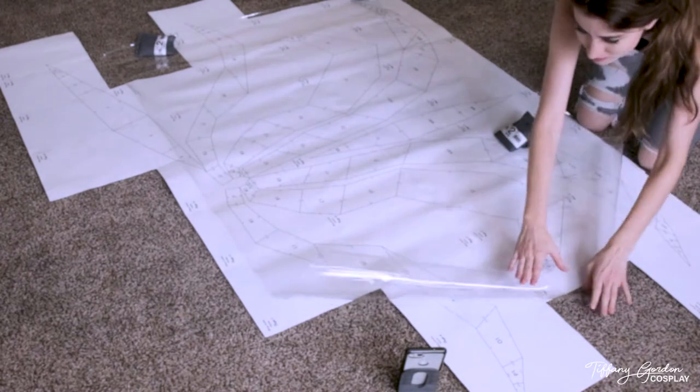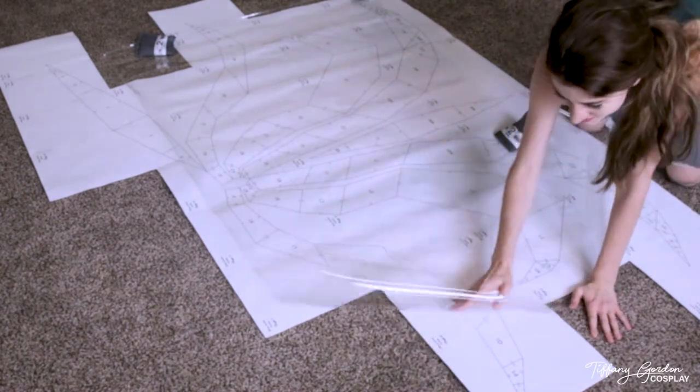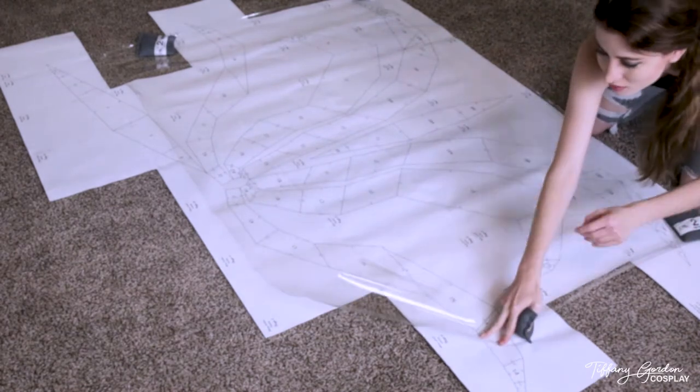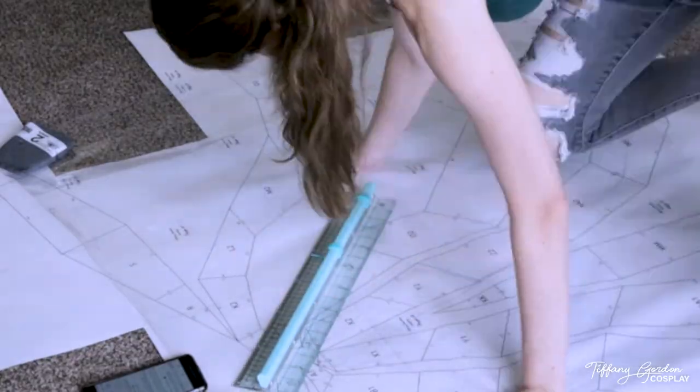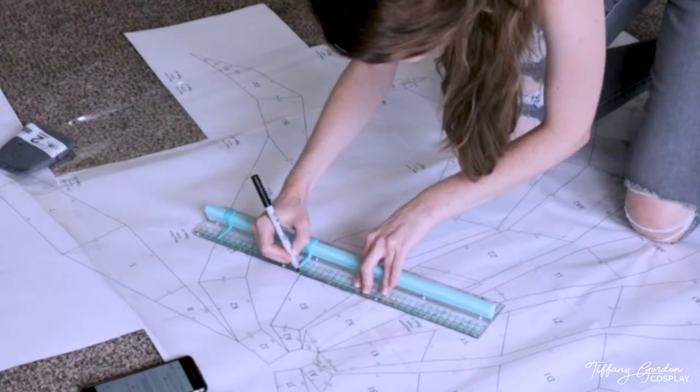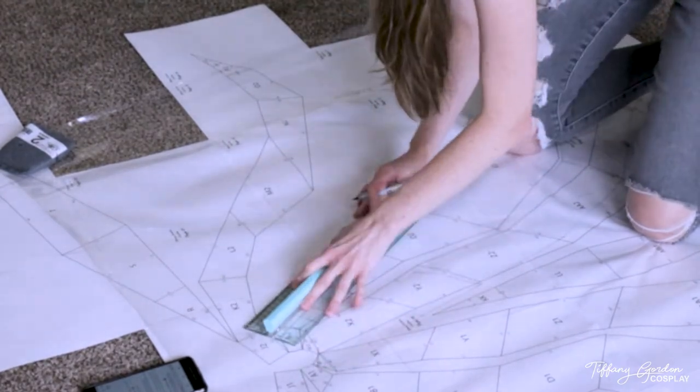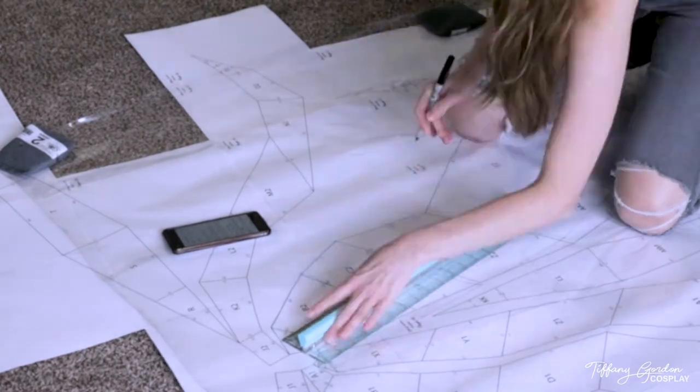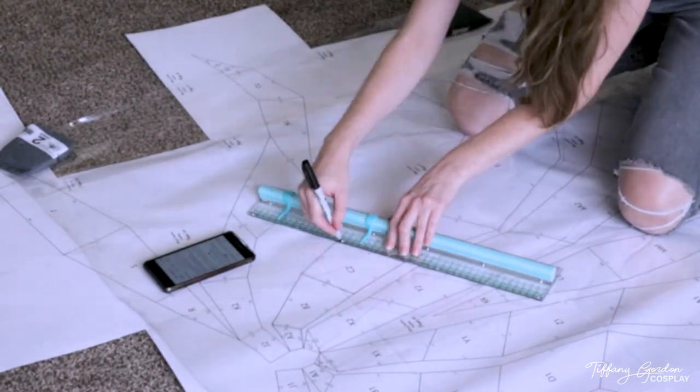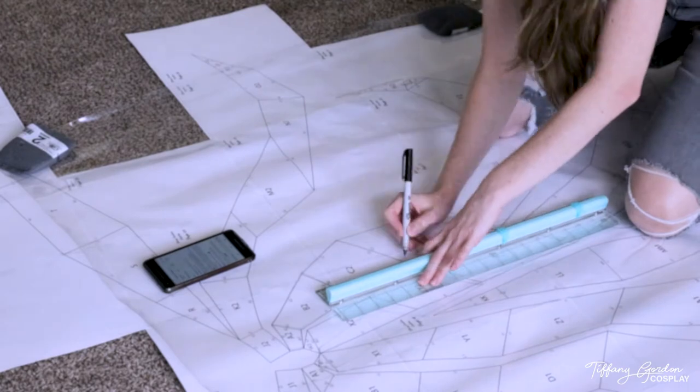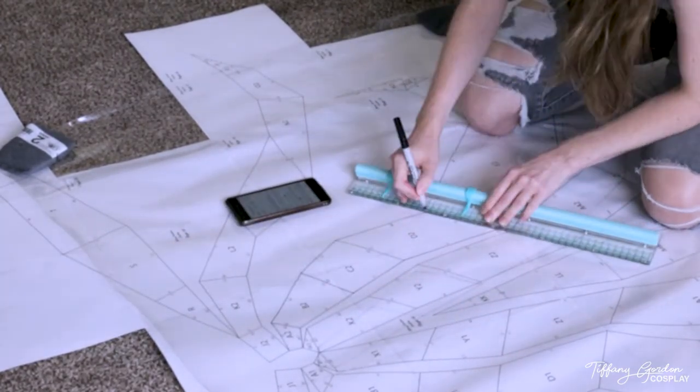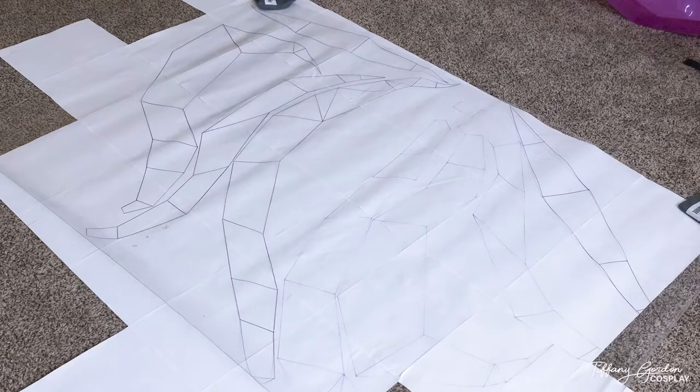You can also do this using EVA foam, but this tutorial is specifically going over how to make it out of transparent worbla. First you'll lay it out onto your blueprint and then use a black Sharpie and a ruler to trace each of the tail segments onto your transparent worbla. You'll need to move the sheet around the blueprint and puzzle piece them together to maximize the use of your worbla.